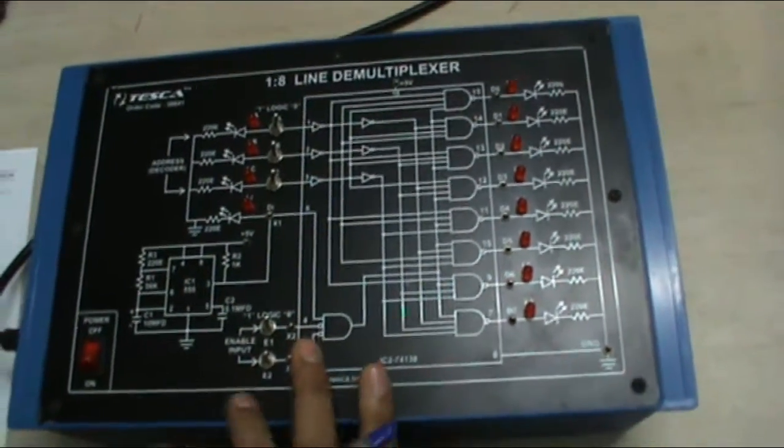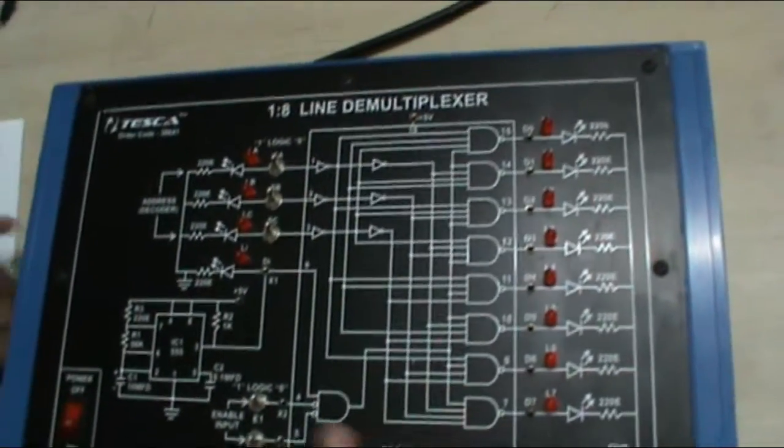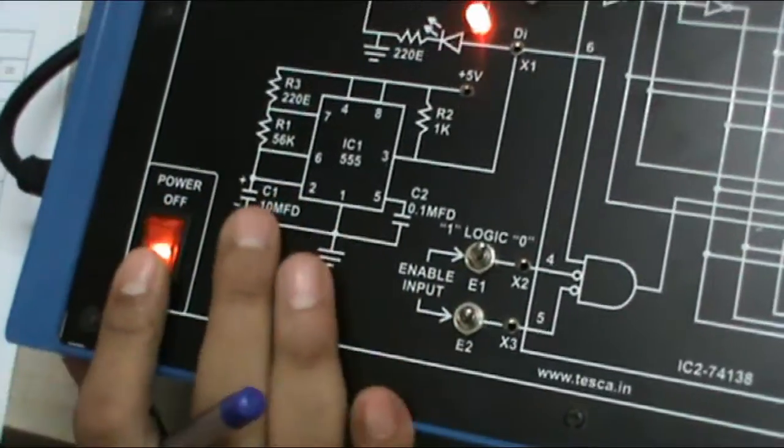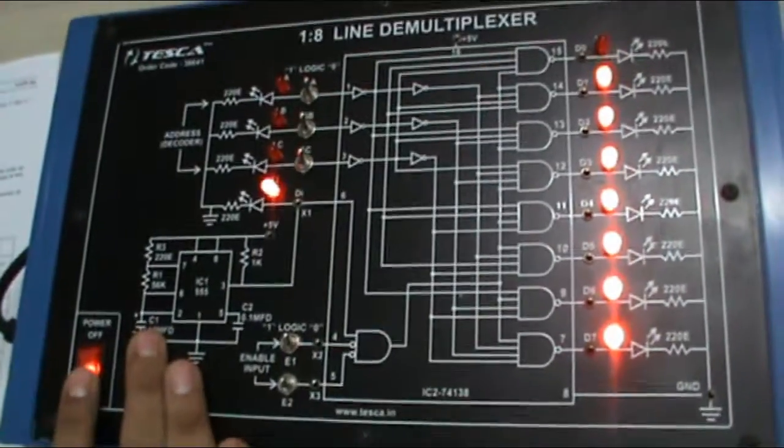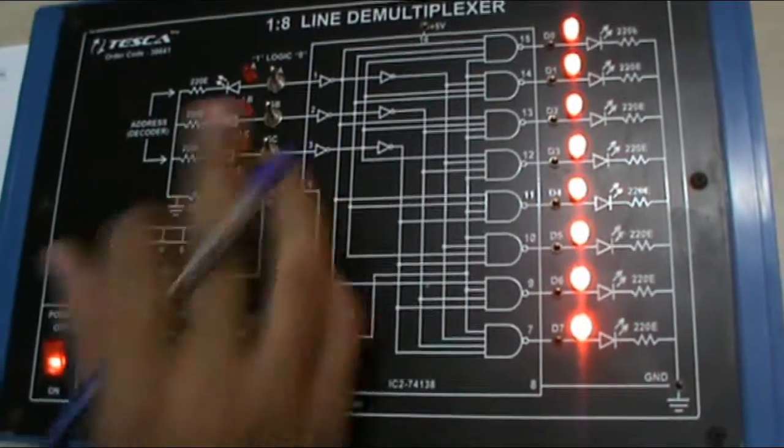First of all in this equipment we connect the AC mains over here. Then we switch on the supply. As we switch on the supply we can see according to this table.